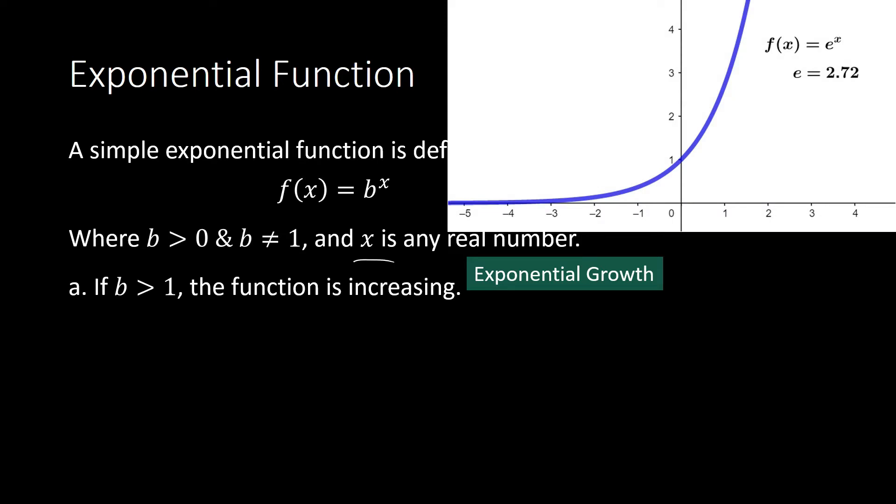This is the graph of the natural exponential function f of x equals e raised to x. The base e here is our irrational number e, approximately equal to 2.72.